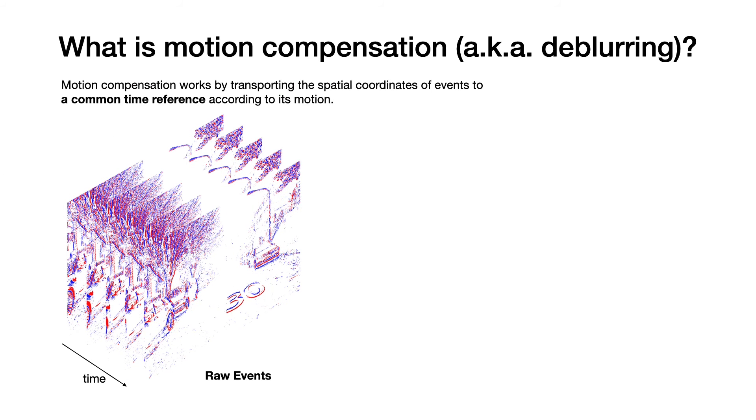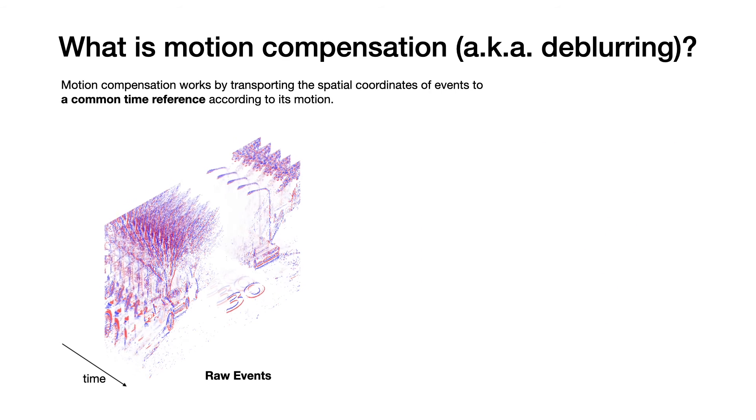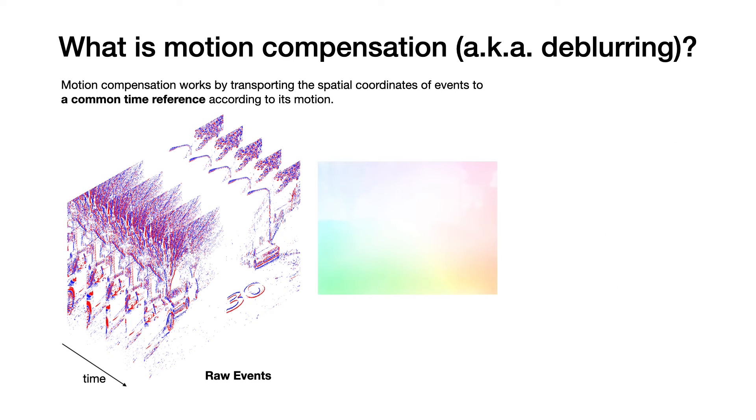Motion compensation works by transporting the spatial coordinates of events to a common time reference according to its motion. When collapsing events with motion to a common time, large motion blur is observed. We can use an optical flow estimate to motion compensate events.